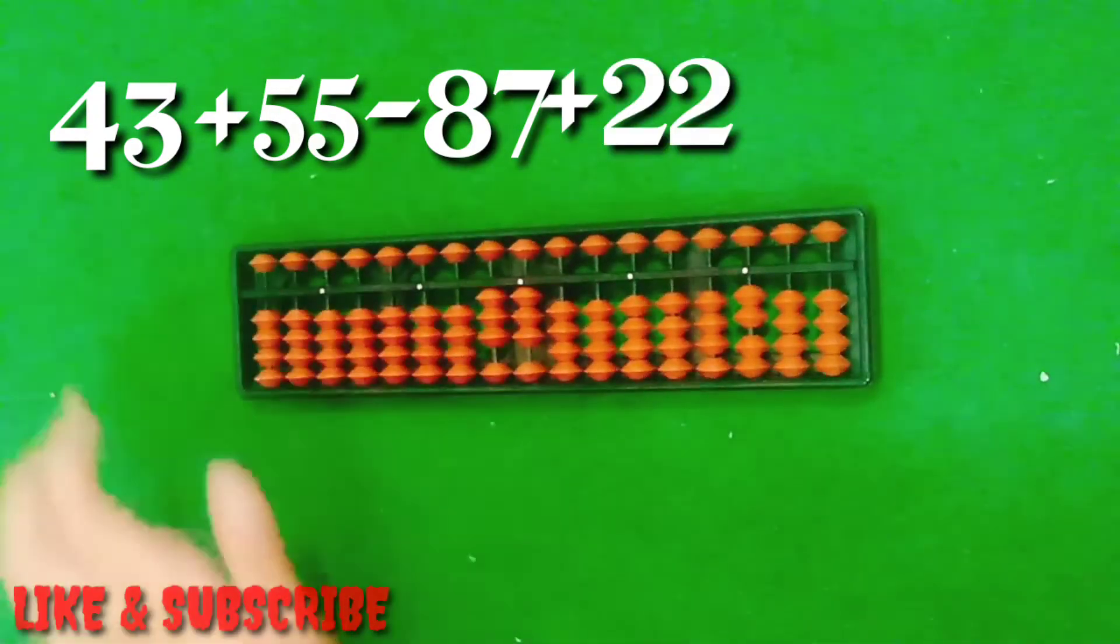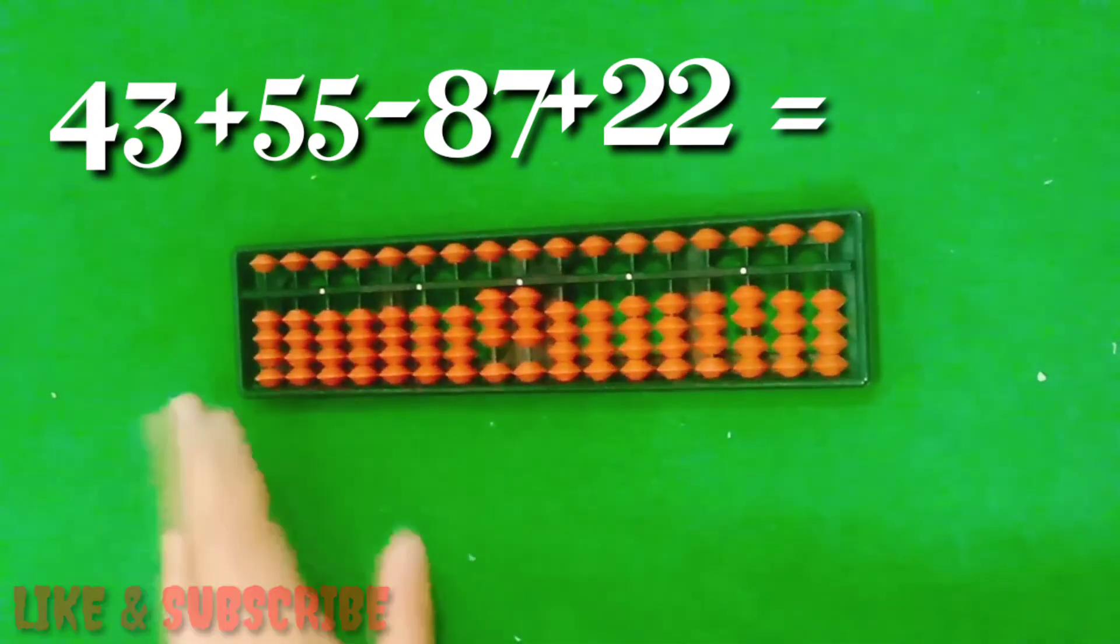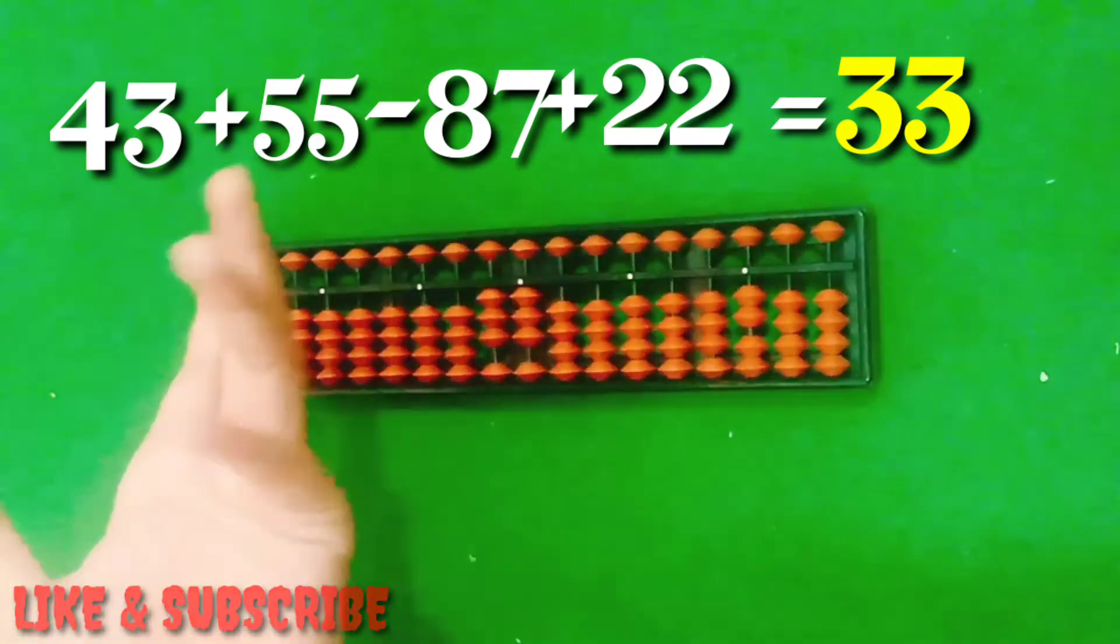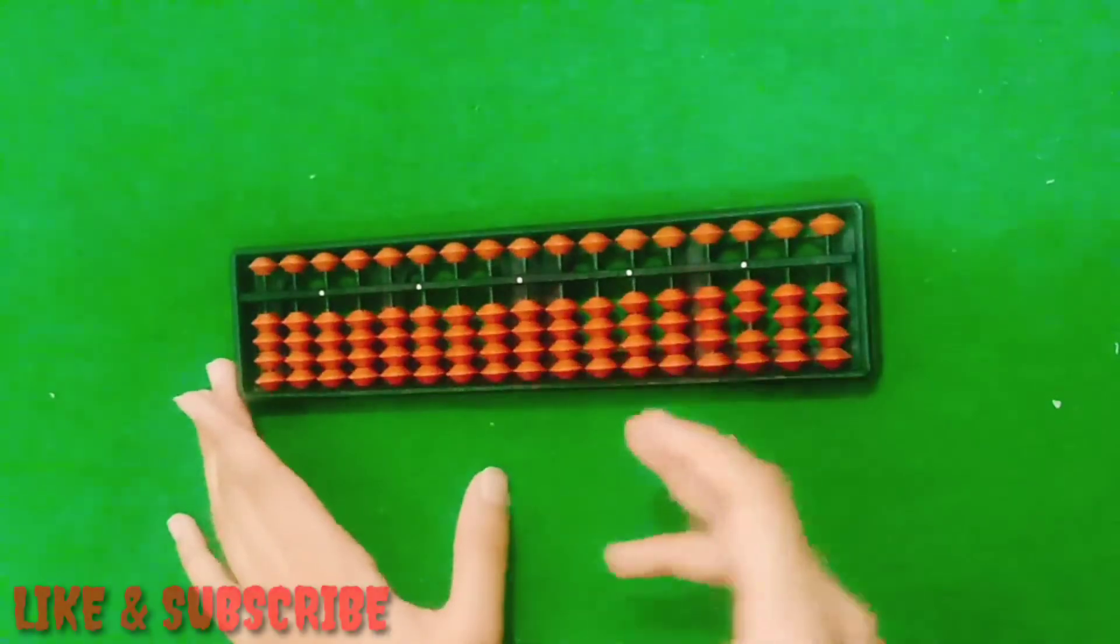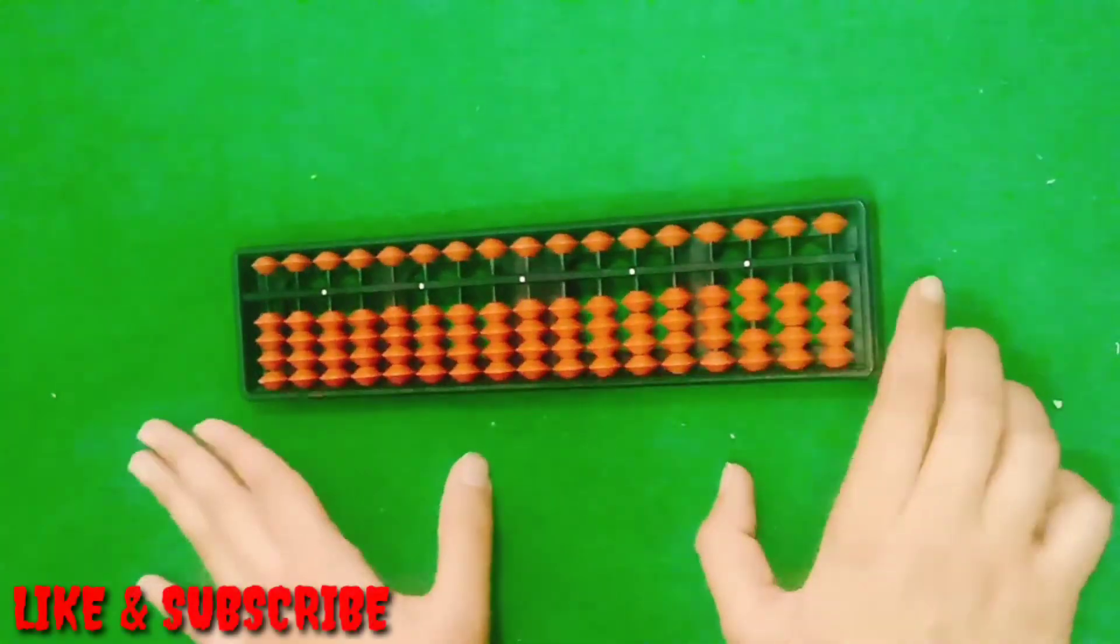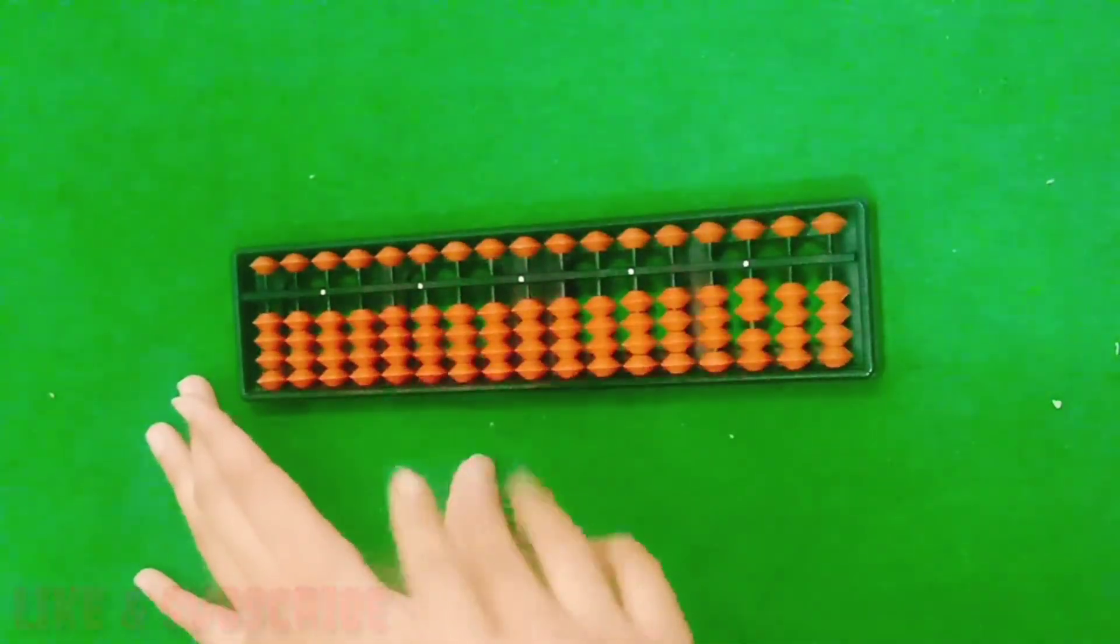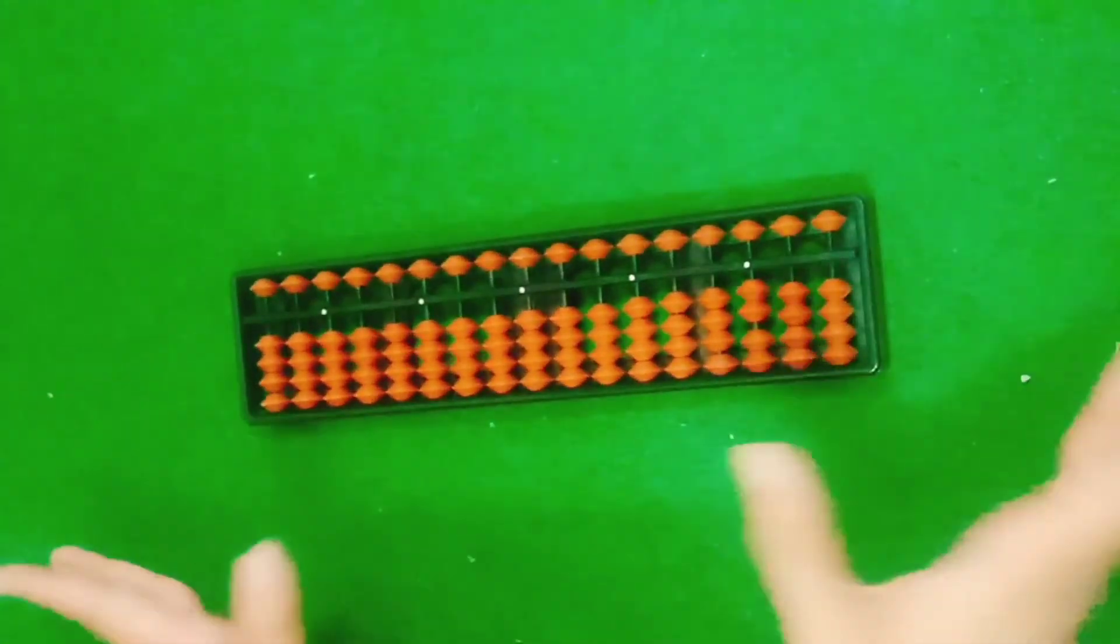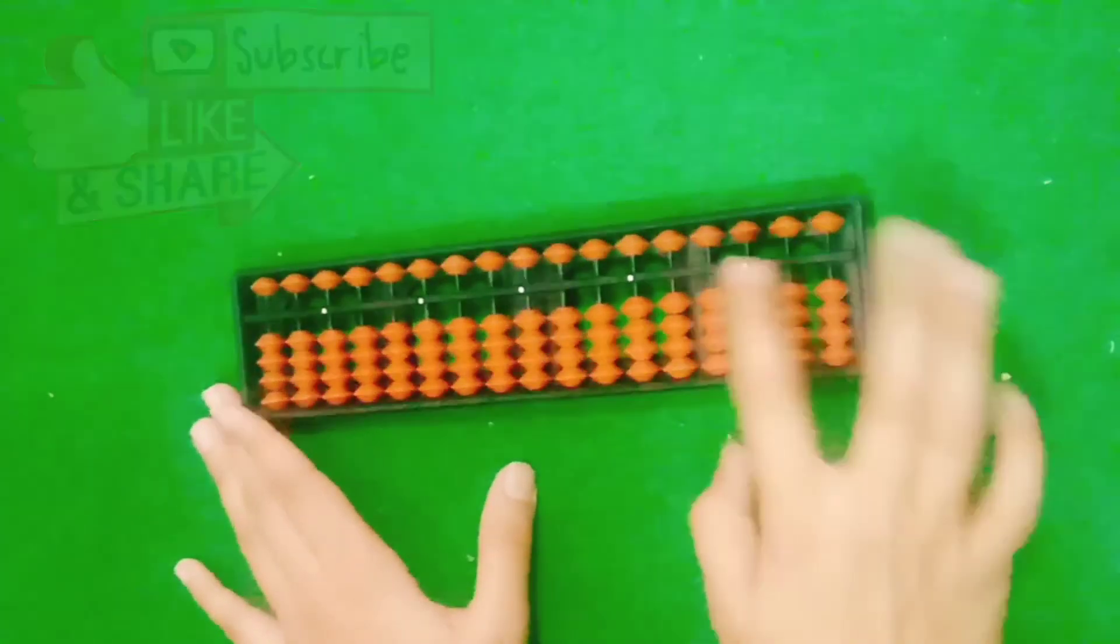22, answer is 33. Because this is 10, 10, 10, 10, 20, 30, and 1, 2, 3, 33. It's simple. If you practice regularly these questions, you will definitely learn abacus easily and fastly. Thanks for watching and don't forget to like and subscribe our channel.